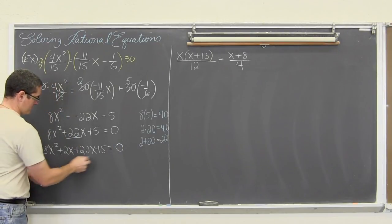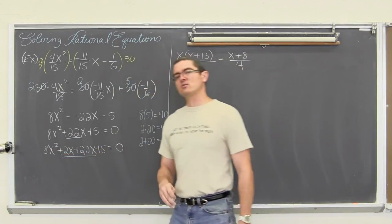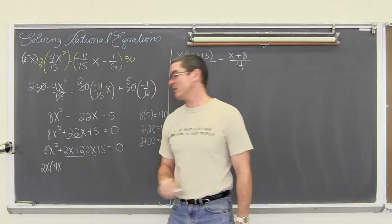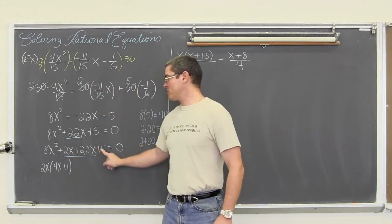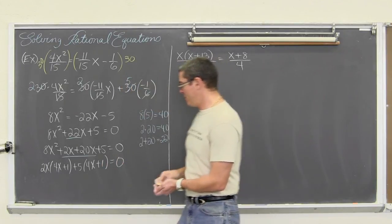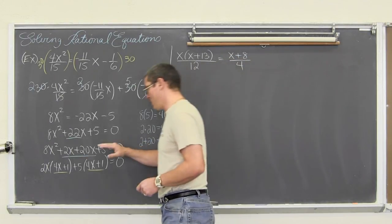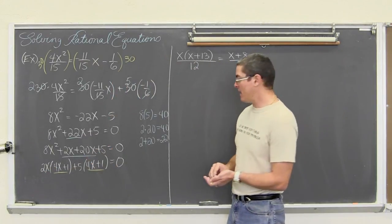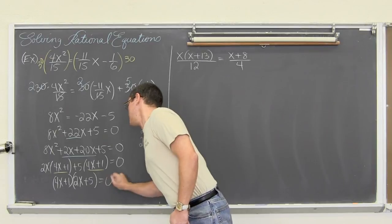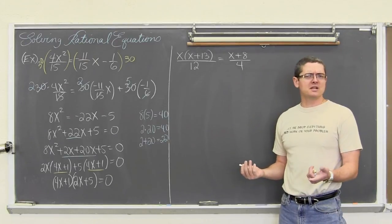With our two middle terms written with these coefficients, we are going to factor by grouping. These first two terms share a common factor of 2x. 8x squared divided by 2x is 4x, and 2x divided by 2x is plus 1. These two terms both share a common factor of 5, so we are going to divide that out. You will notice that we have a common factor within our two new terms, which is 4x plus 1. So we are going to factor out 4x plus 1 and write 4x plus 1 times 2x plus 5 is equal to 0. Now that we have this in factored form, we are going to solve this equation by factoring.